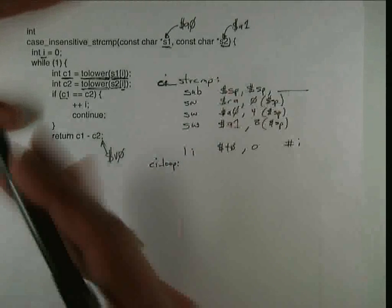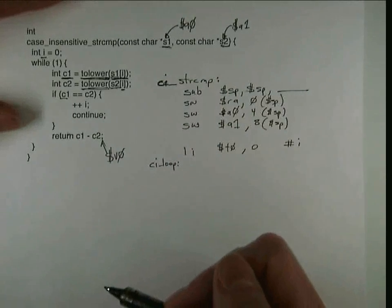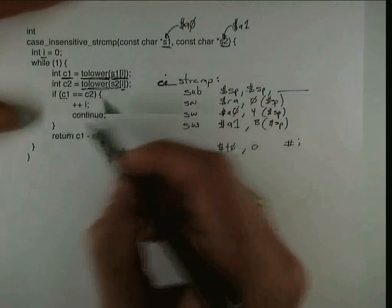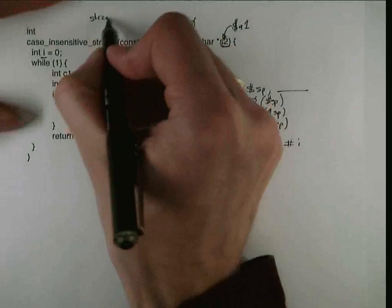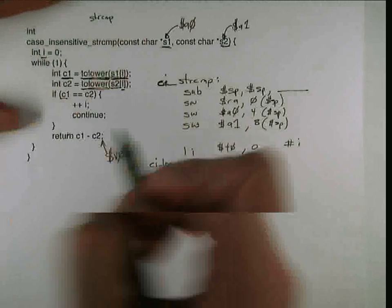We're going to compute which of these two strings is earlier in alphabetical order. And the one twist that we have here that's different than the C function strcmp is that we want to do it in a case insensitive manner.